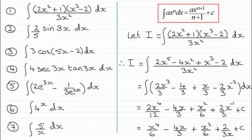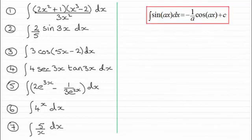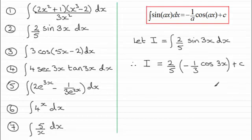Now with the second question, it's based around using this standard result. The integral of sin ax with respect to x is equal to minus 1 over a cosine ax. So we can see then that if we let i equal that integral, then we're going to end up with 2 fifths times minus 1 third cosine 3x plus the constant of integration. The a clearly being the 3 here. So 2 fifths times minus 1 third gives minus 2 fifteenths. So you're going to end up with minus 2 fifteenths cos 3x plus the constant of integration.